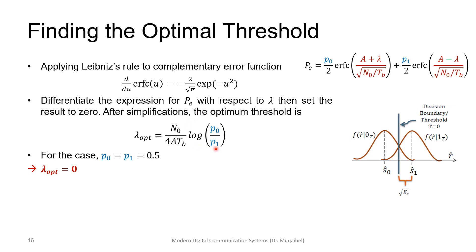Differentiating the expression for the probability of error with respect to lambda and setting the result to zero, without showing all the details here, we get that the optimal value of lambda equals N₀ over 4ATB times the log of P0 over P1. This is now the general solution — the general optimal threshold, whether you have equal probability or not. As you can see, it's a function of P0 and P1. We can check the familiar case: if P0 equals P1 equals 0.5, that gives log of 1, which cancels and I get 0 — which is something I already knew.